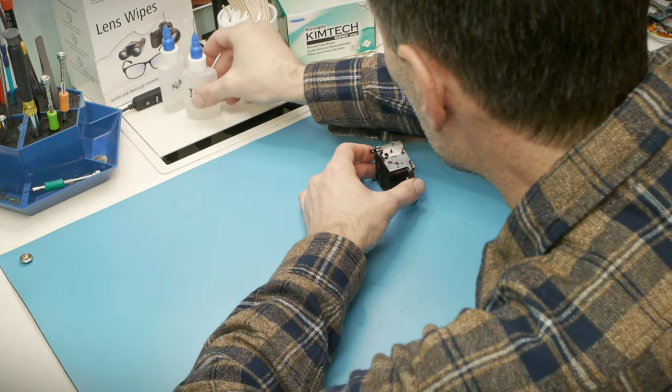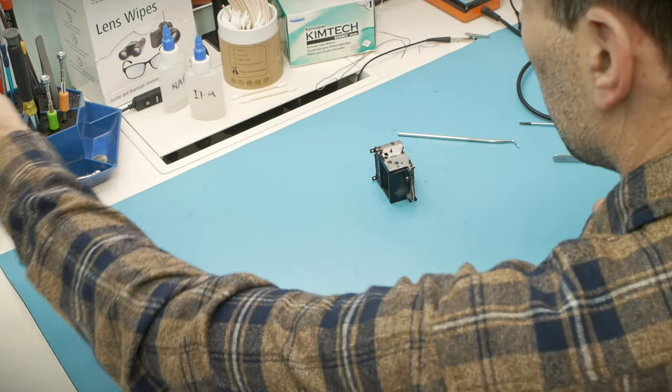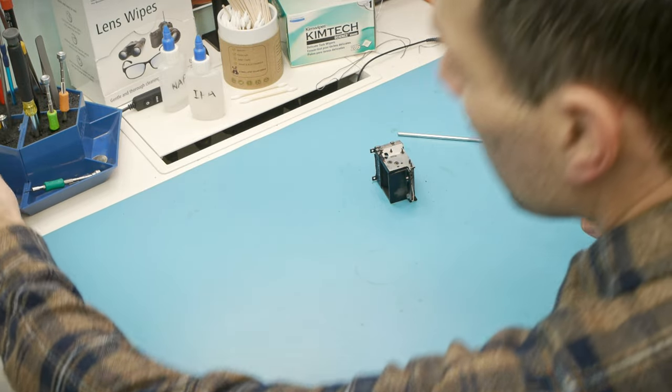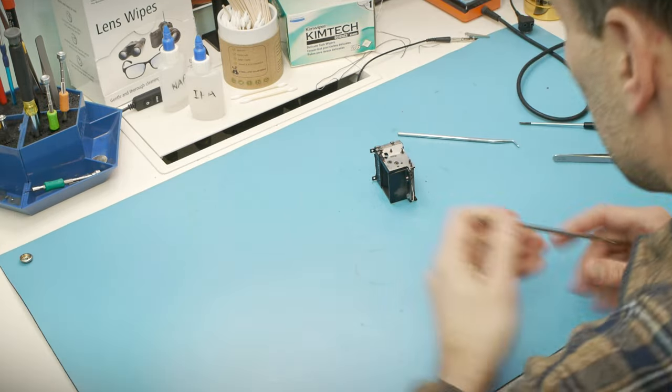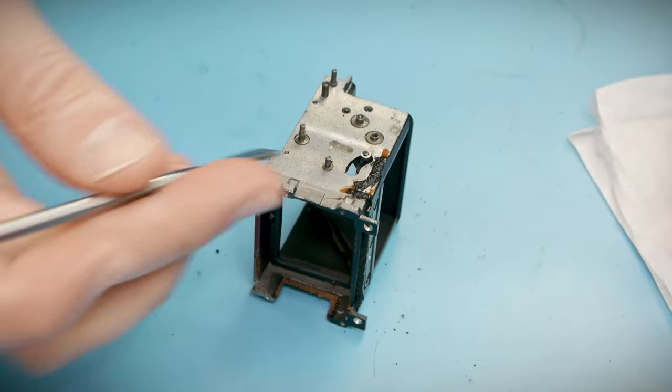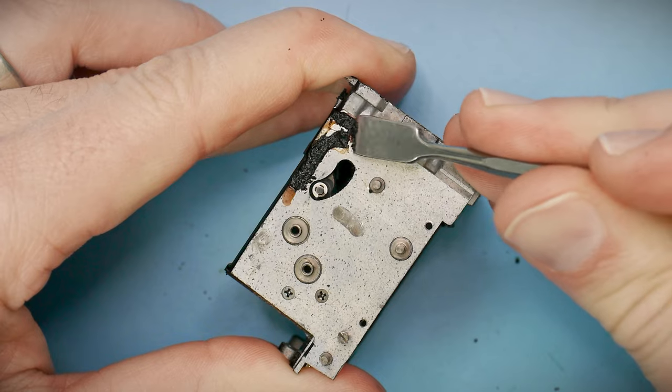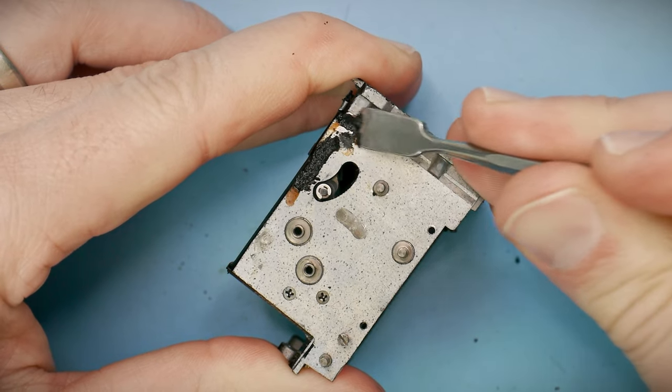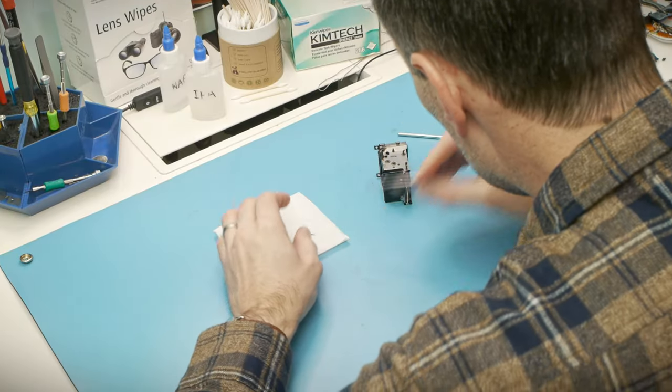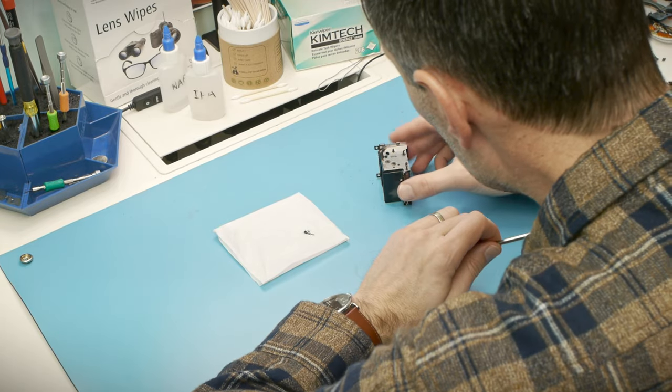Okay, moving on to cleaning. I'm going to start with these two bits of foam in the top corner. They are also light seals that keep any stray light in the body of the camera from making its way to the film plane.